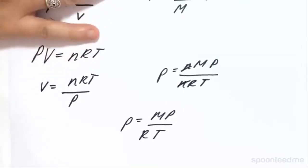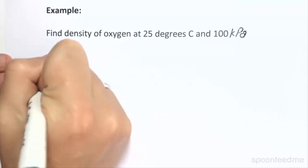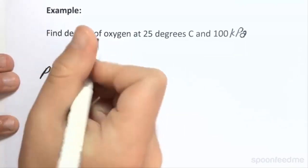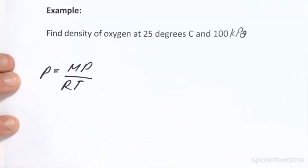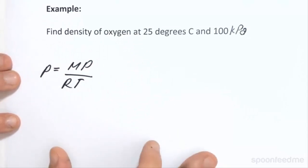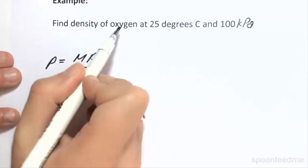All right. So let's do an example. So let's find the density of oxygen at 25 degrees Celsius and 100 kilopascals. So using our equation that we found, we know that density equals the molar mass times the pressure over a constant times the temperature. We know that the molar mass of oxygen is 32.